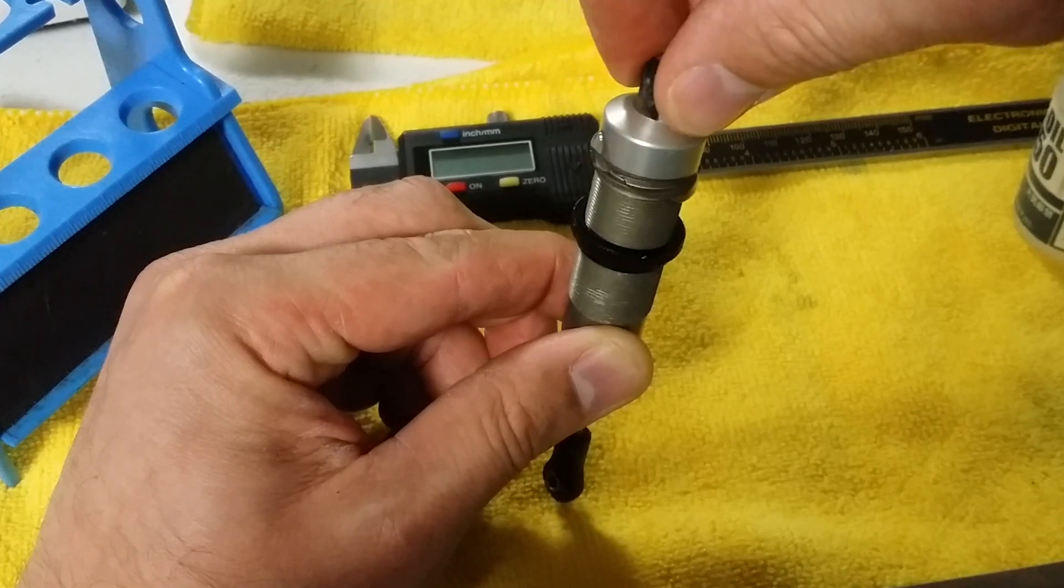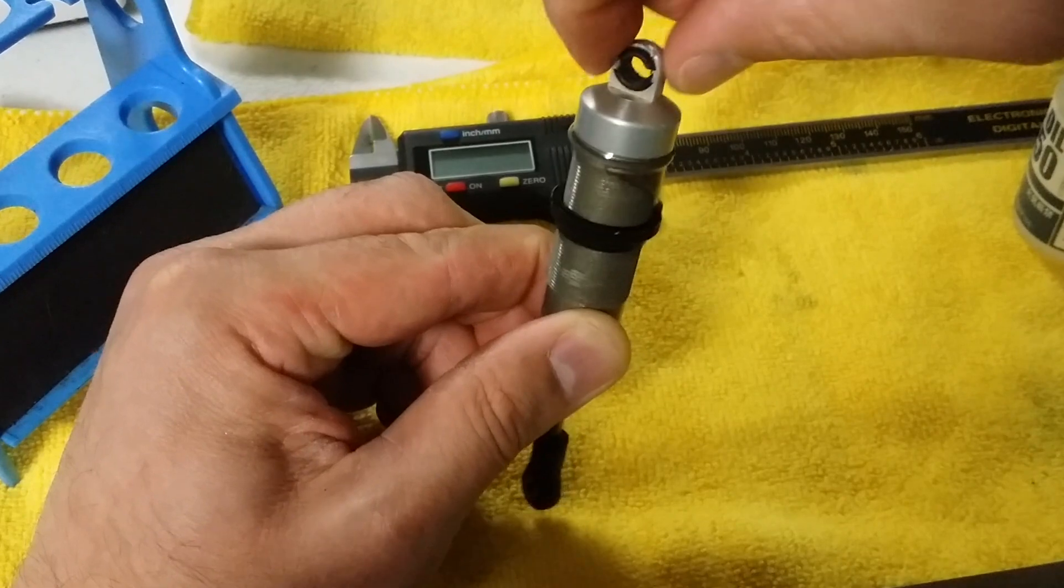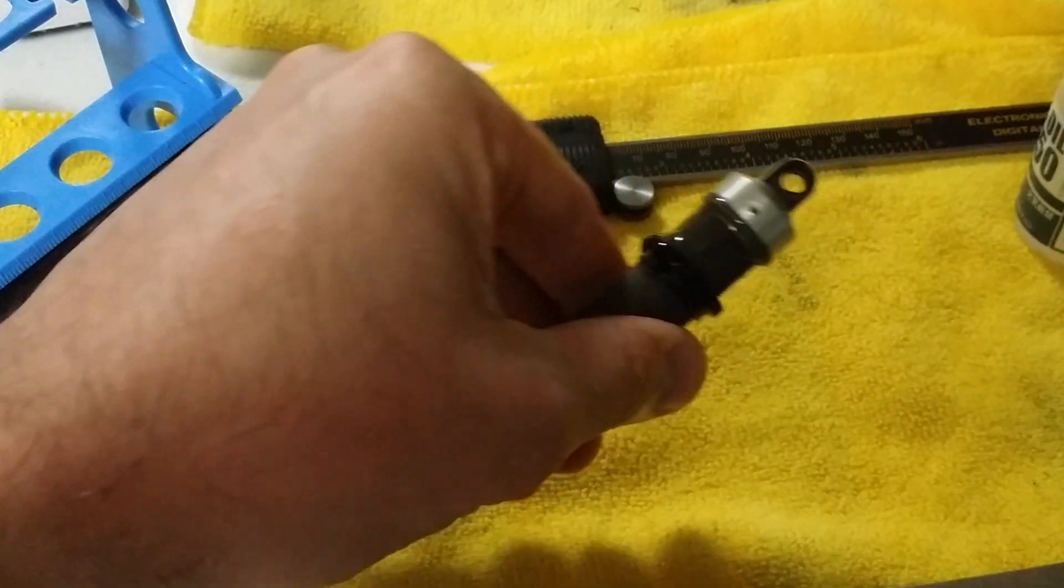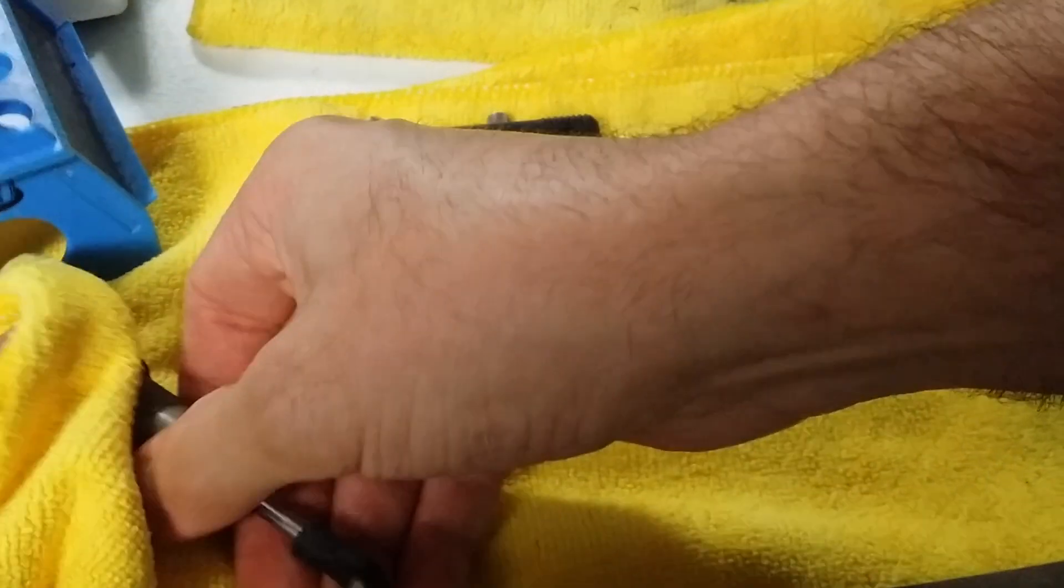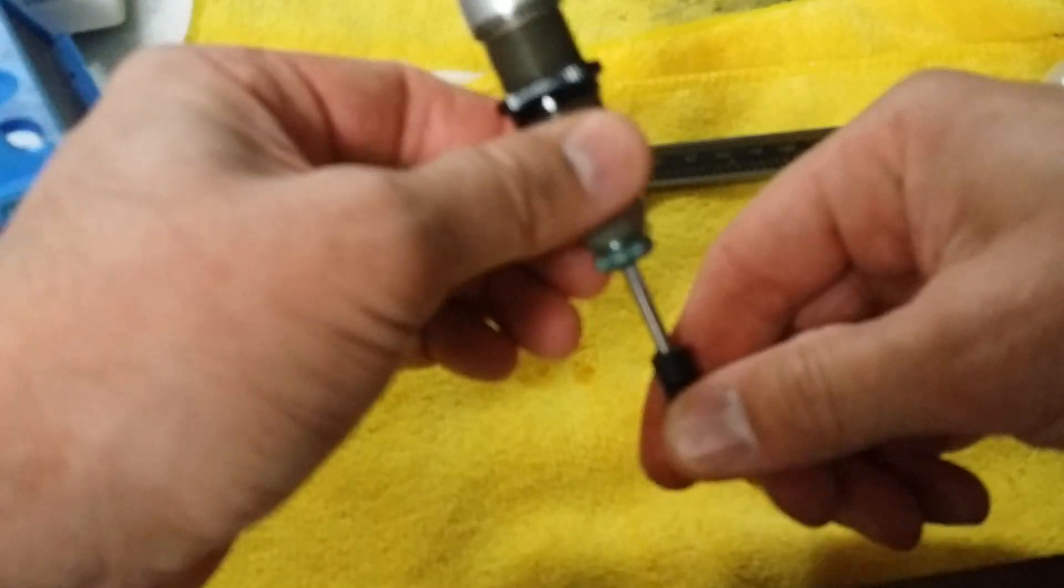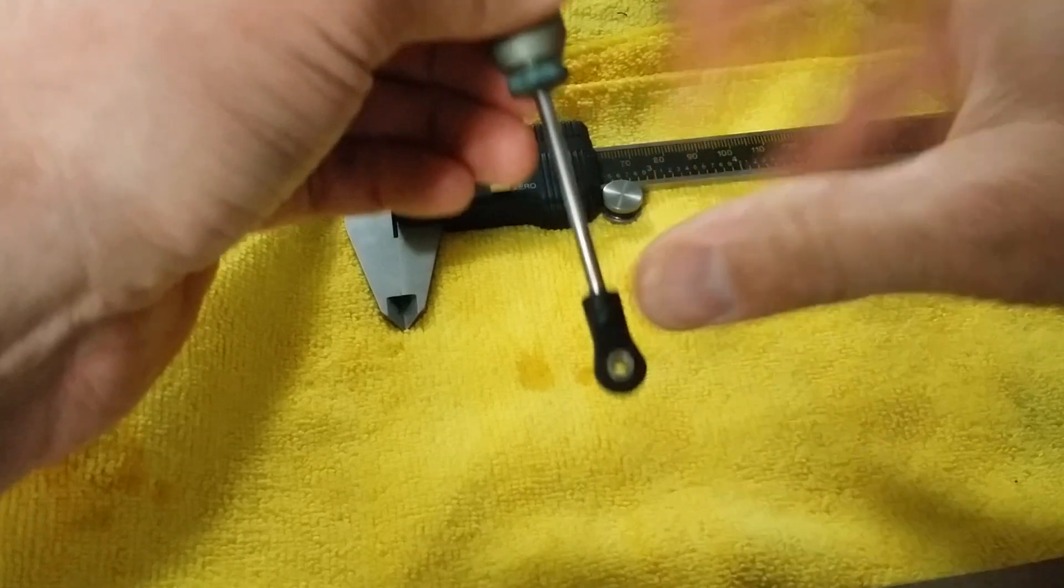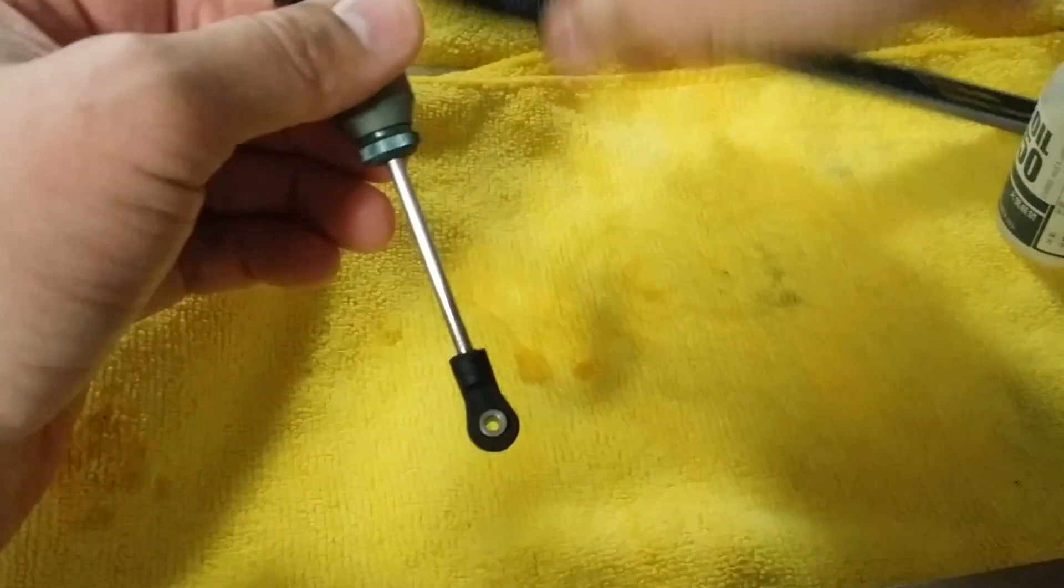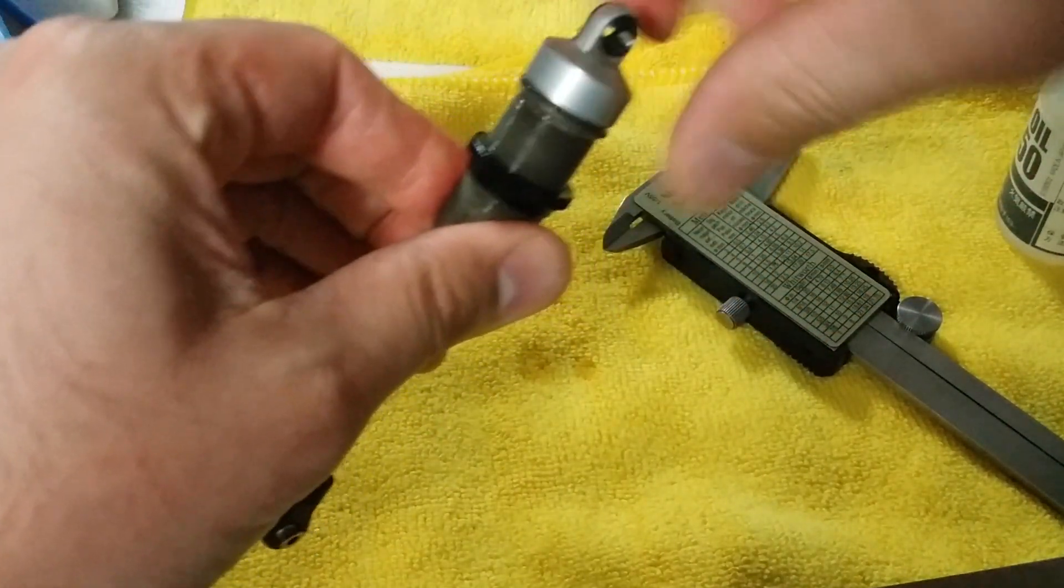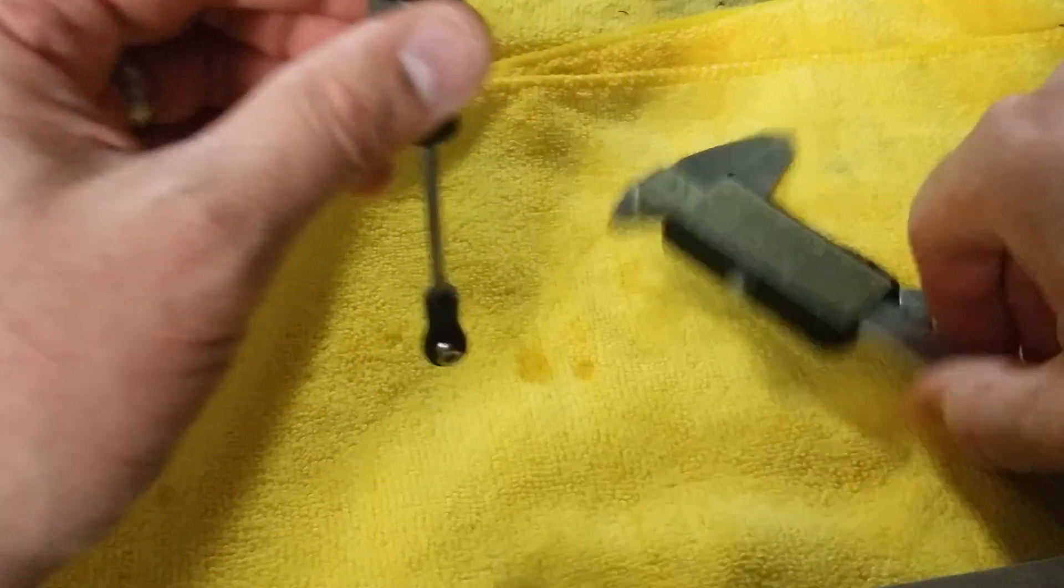There you go, that's your shock build. Also, one thing you can do when you have the shock cap off - if you want to be precise on your rebound, you can use one of these digital calipers.